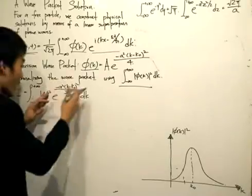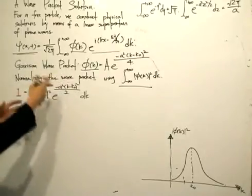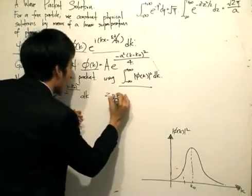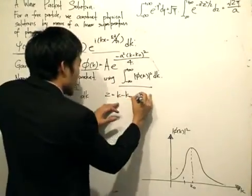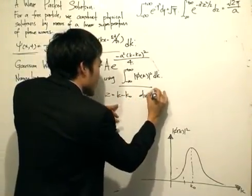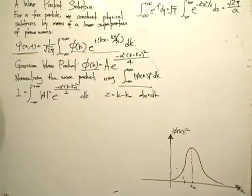And then since we have this messy argument, what we'll let is that we'll let z equals k minus k₀. And then that would give us dz equals dk. So the differential dk doesn't change.